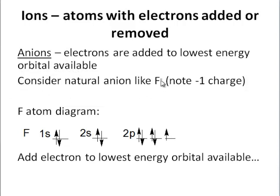Consider a natural ion like fluoride, F-, note the negative 1 charge. This naturally occurring ion has an electron added.